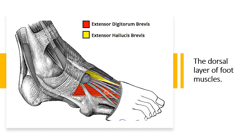The nerve supply is the deep fibular nerve. Extensor hallucis brevis is medial to the extensor digitorum brevis and lateral to the extensor hallucis longus.